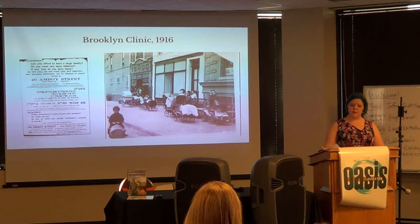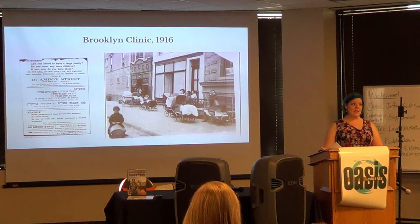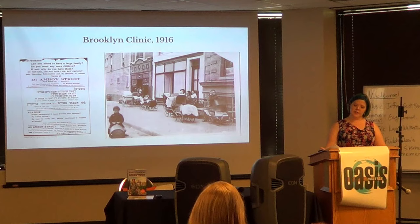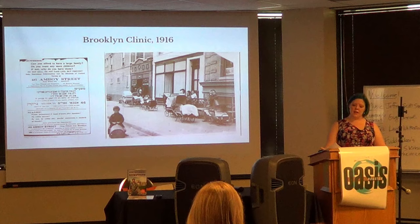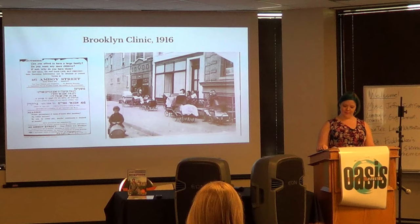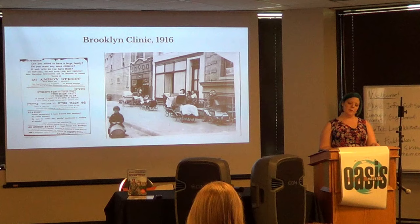Ten days after the clinic opened, a well-dressed white woman came in with a baby and identified herself as Mrs. Whitehurst. She stood out among the other women in both appearance and demeanor. The receptionist, Fania Mendel, was suspicious and warned Margaret, but Margaret still took her into the exam room and counseled her on birth control. Mrs. Whitehurst was an undercover policewoman, and the baby was even a prop borrowed for the occasion. She returned the next day with three officers who shut down the clinic, threatened the patients with subpoenas, and confiscated everything from copies of Margaret's writing down to the furniture.